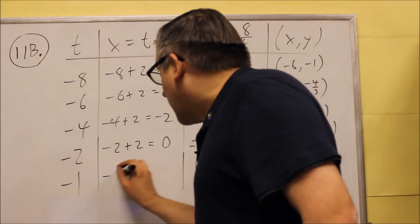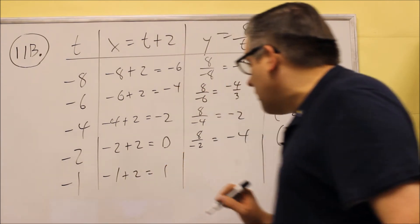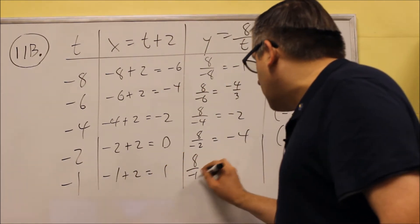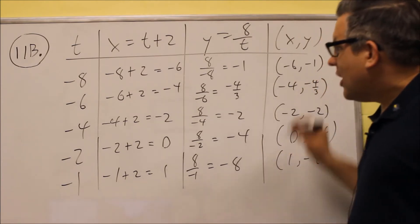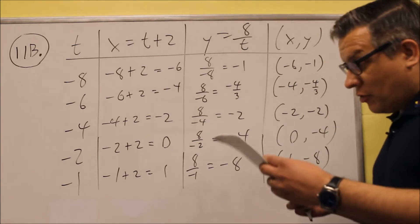And then finally we have negative 1 plus 2 is 1. 8 divided by negative 1 is negative 8. So we get 1, negative 8. So now this completes our table.